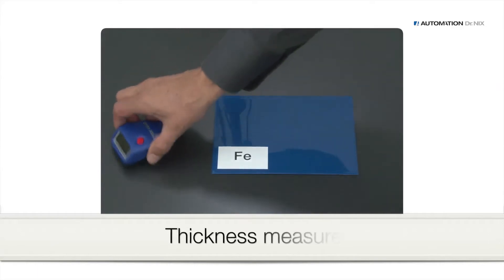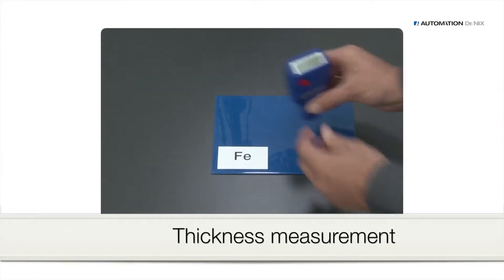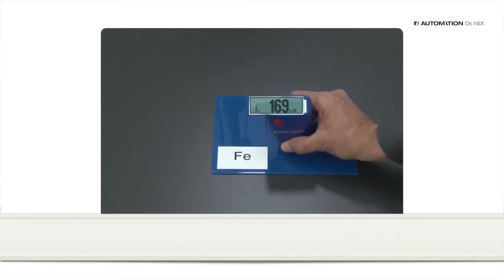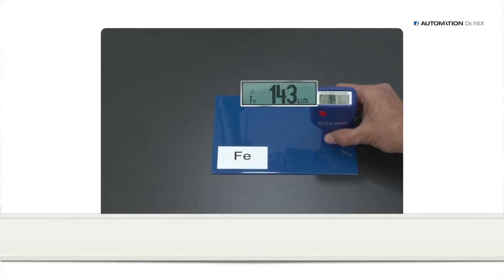To perform thickness measurement, place the QNIX 4500 plainly on the surface and read the measurement from the display. Measurements can be carried out in a quick series.